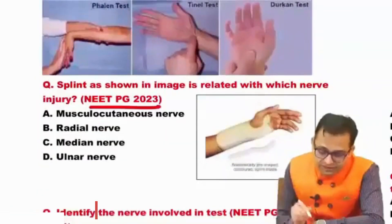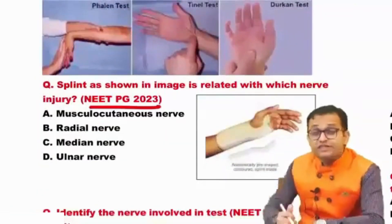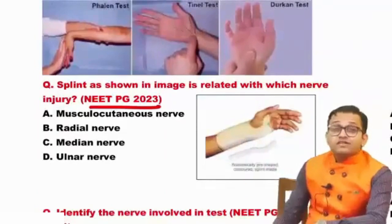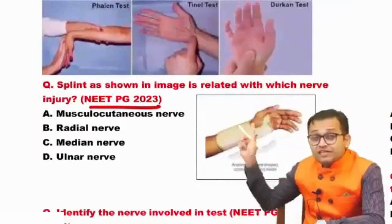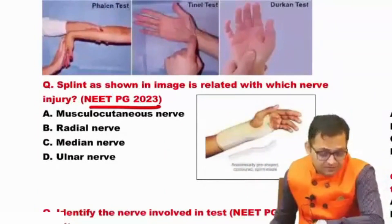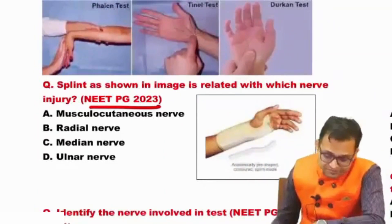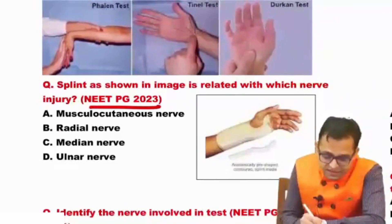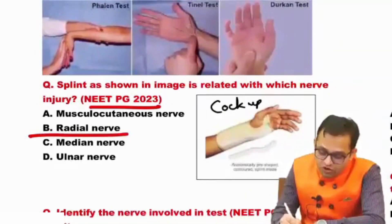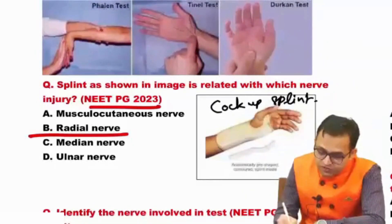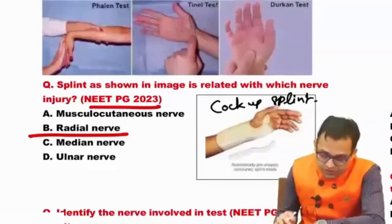NEET PG 2023 integrated radiology question: the splint as shown in the image is related with which nerve injury? This is the radial nerve. The name of this splint is the Cockup splint, used for the radial nerve.